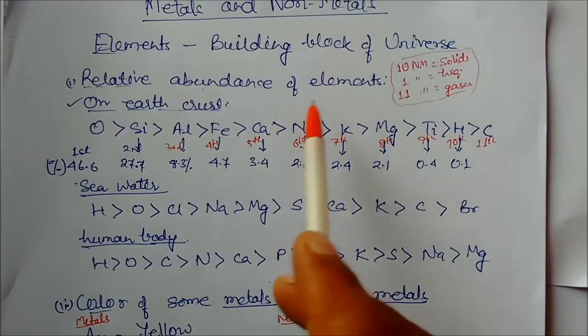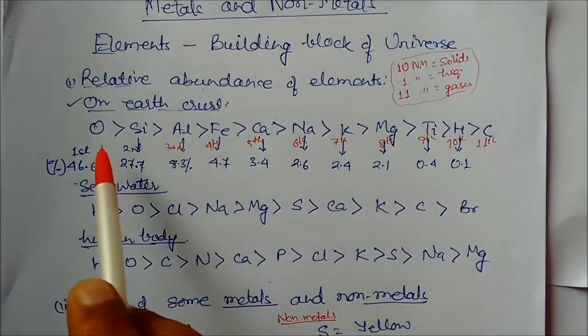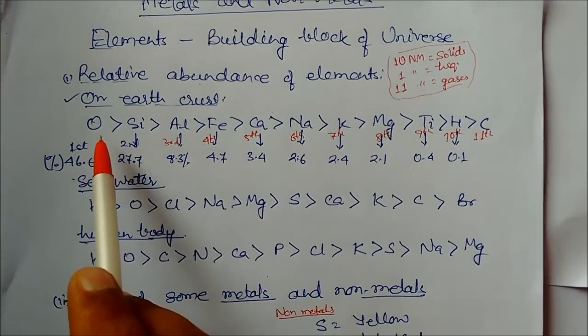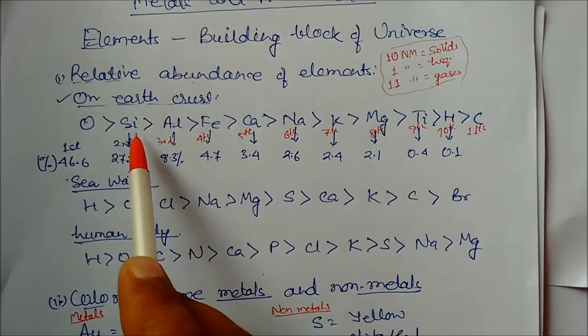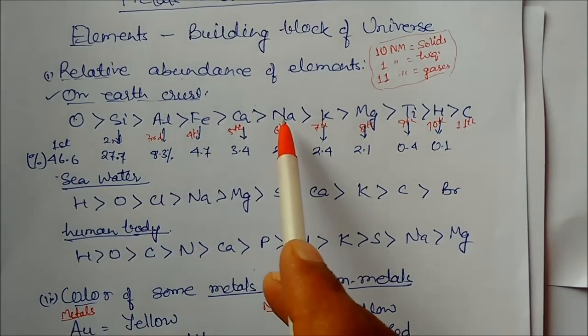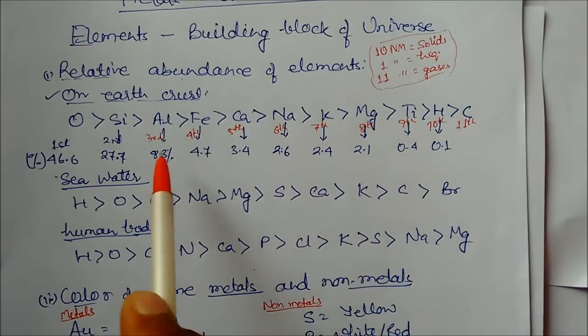On Earth's surface, if you take the concentration by percentage, oxygen is the highest present at about 47%, followed by silicon, aluminum, iron, calcium, sodium, potassium, magnesium, titanium, hydrogen, and carbon in decreasing order.